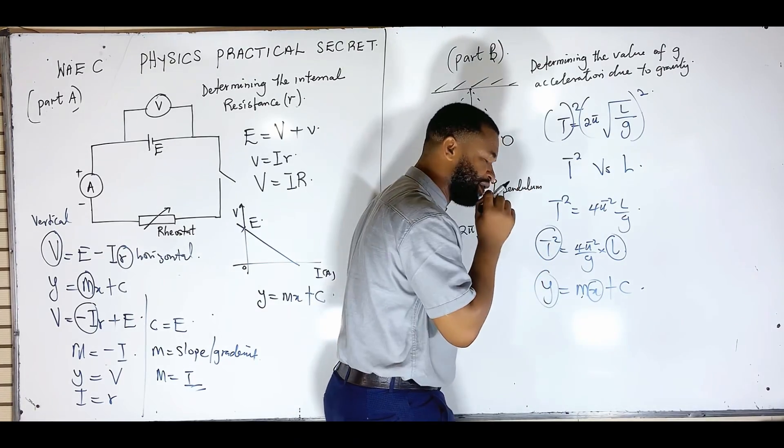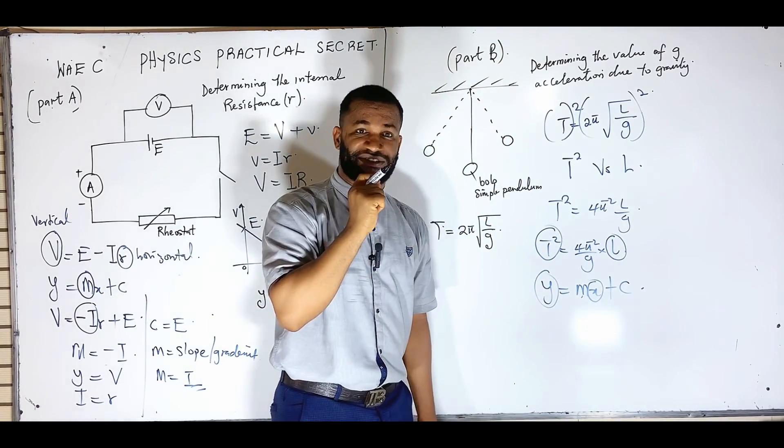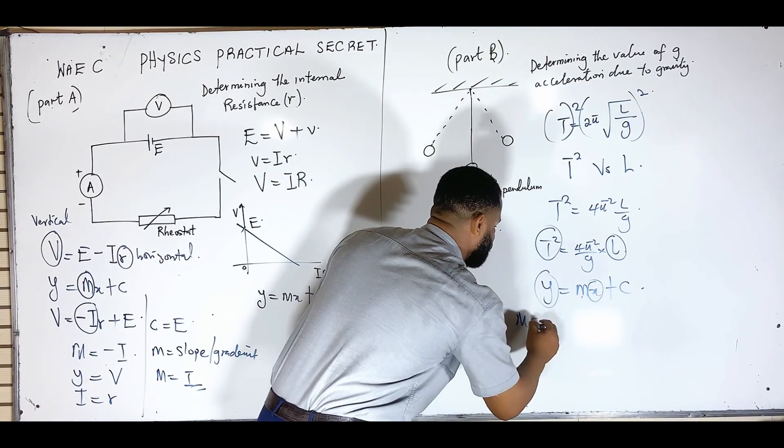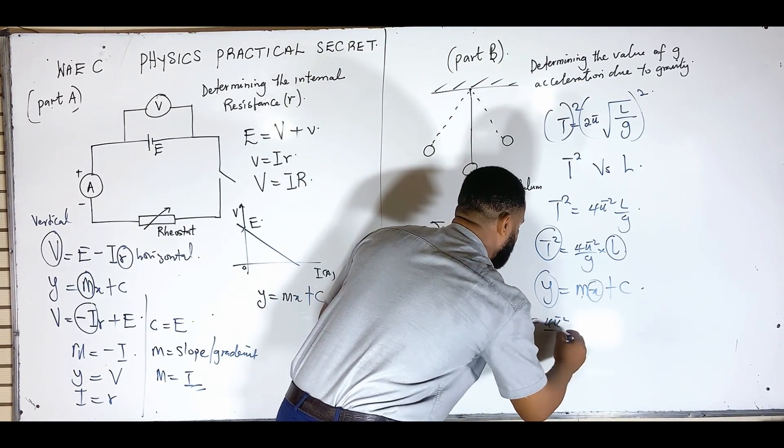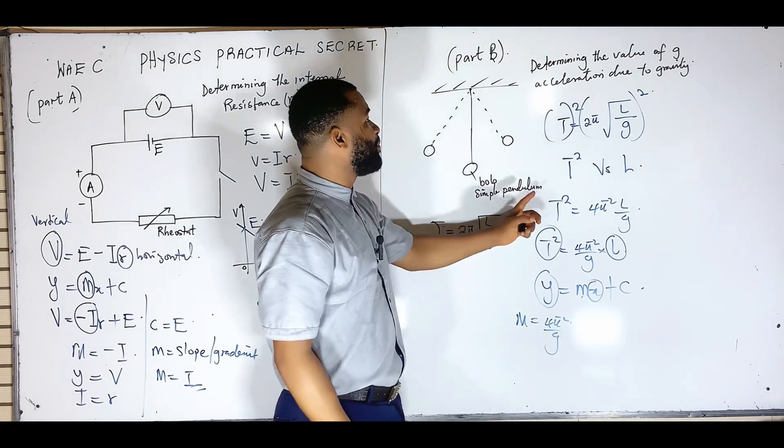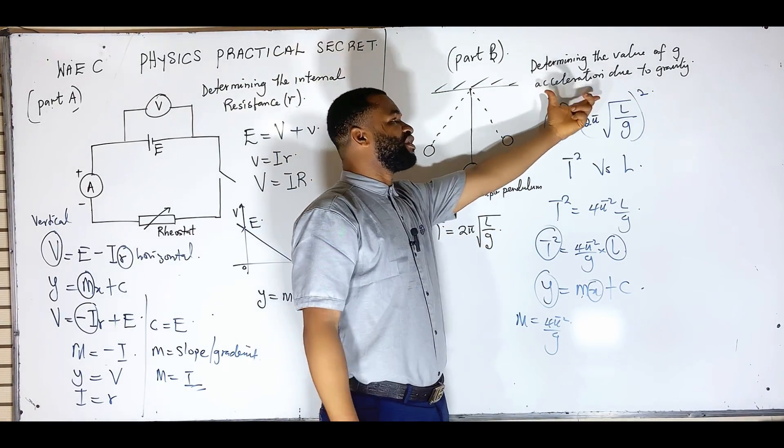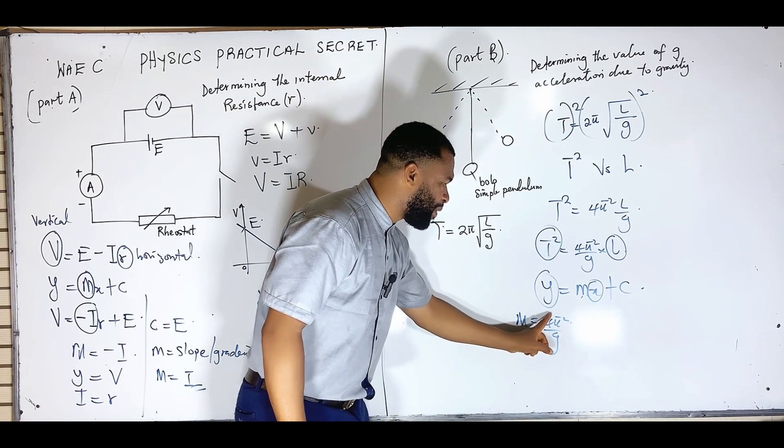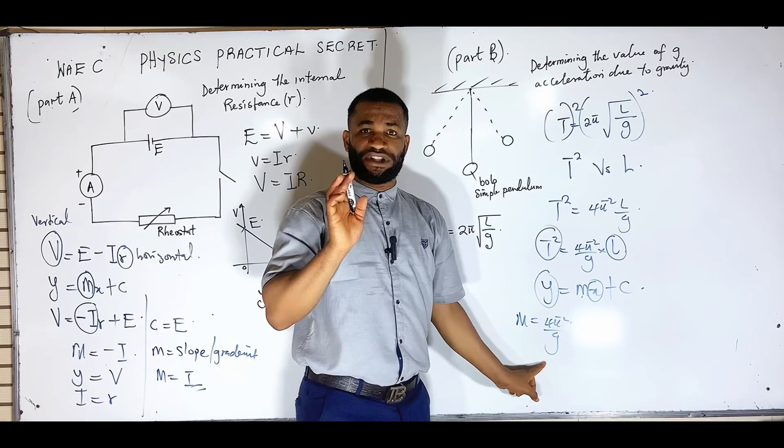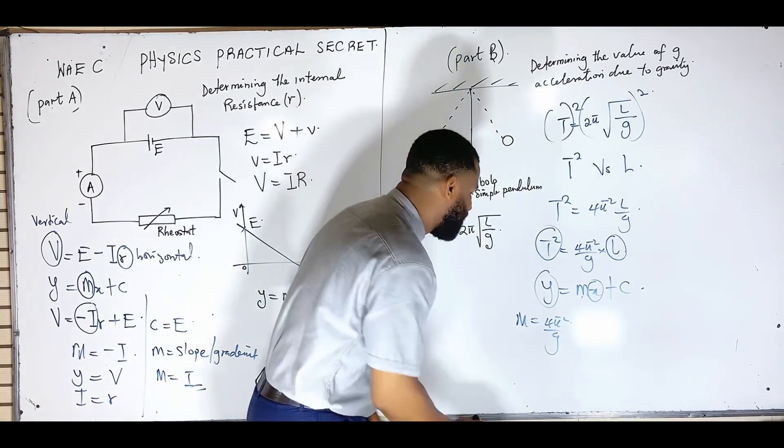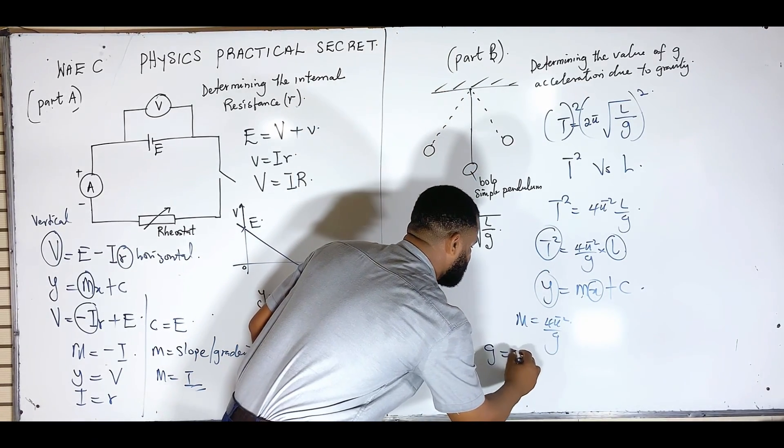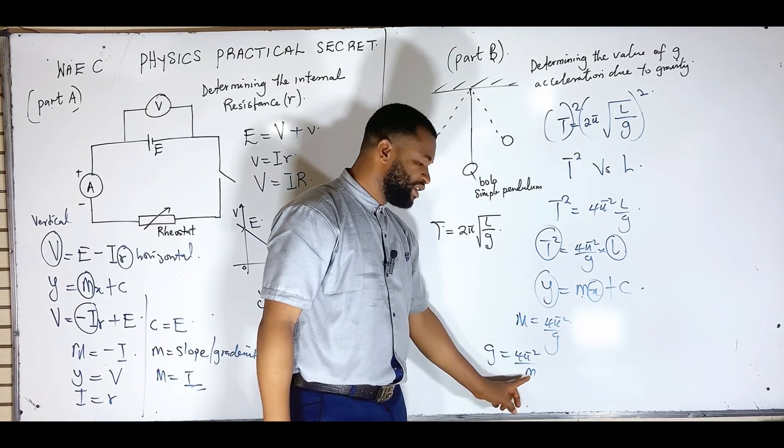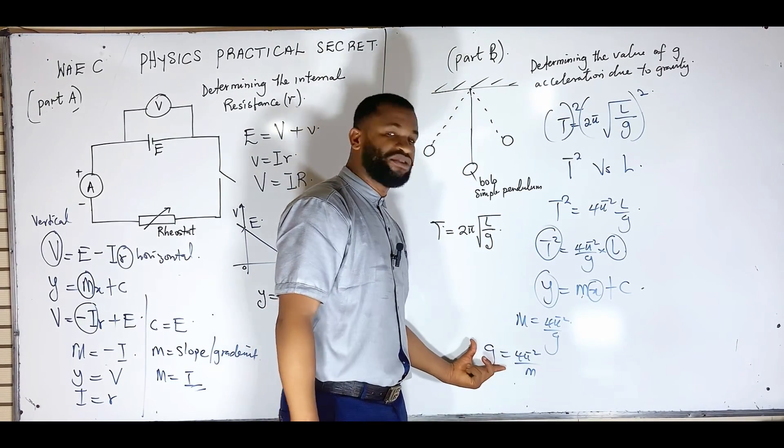M is the coefficient of X, which is the slope. Therefore, the slope here is going to be 4π² all over g. So when I am doing acceleration due to gravity using this equation, my slope is going to be 4π² all over g. That simply means to get my g, I can make g the subject formula: g equals 4π² all over M. Whatever my slope is, if I divide 4π² by it, I am going to have acceleration due to gravity.